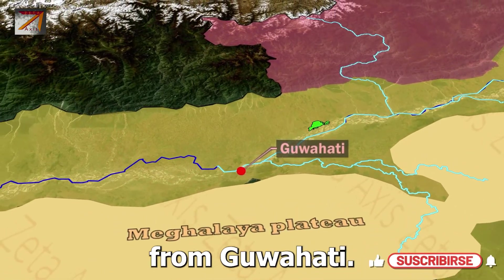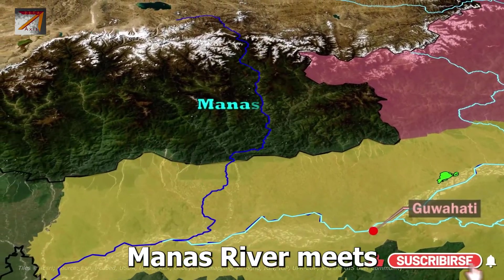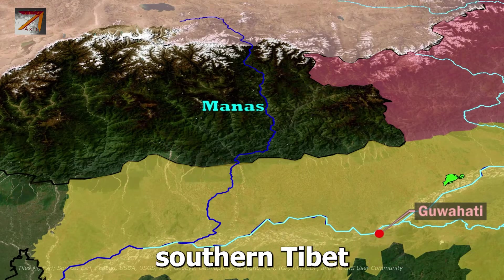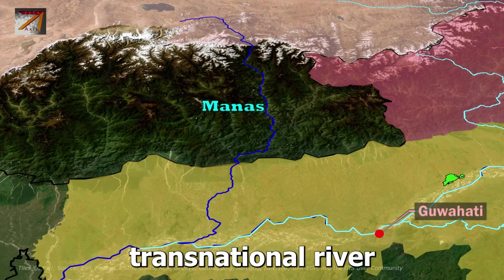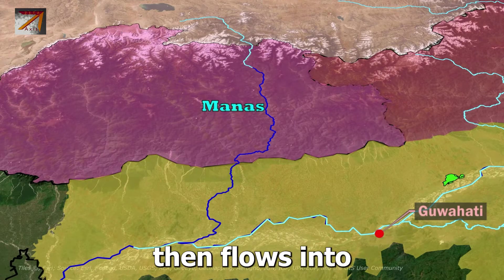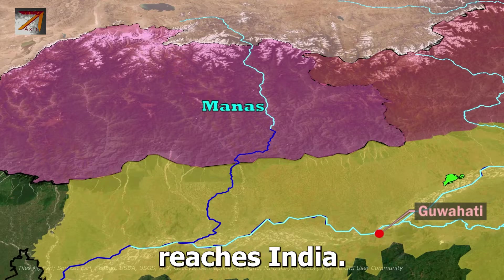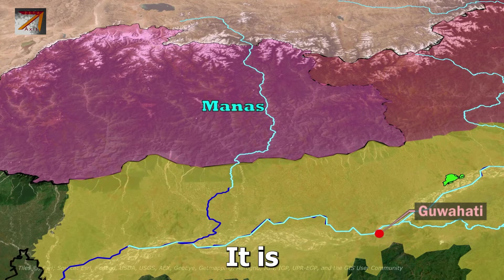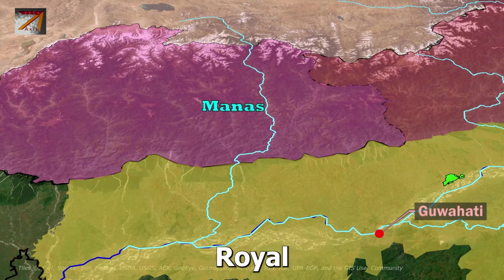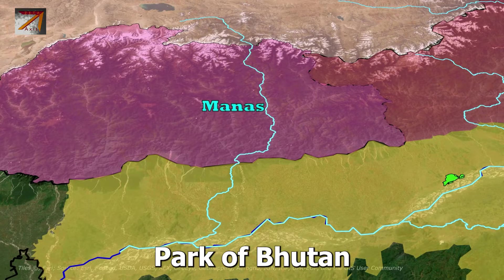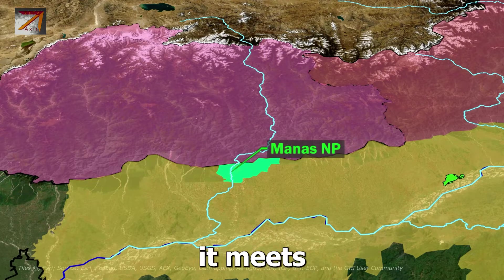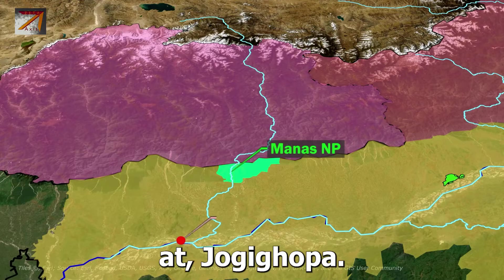Downstream from Guwahati, the Manas River meets Brahmaputra. The Manas River originates in southern Tibet and is a transnational river, flowing from China through Bhutan and into India. It is the largest river of Bhutan, passing through Royal Manas National Park in Bhutan and Manas National Park in Assam. Finally, it meets Brahmaputra at Jogighopa.